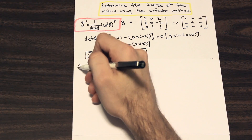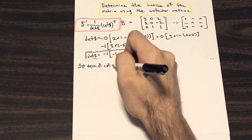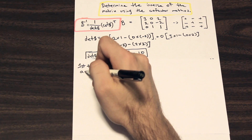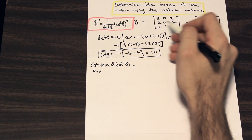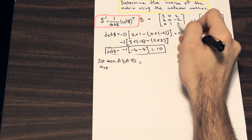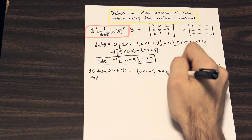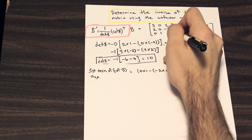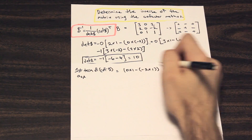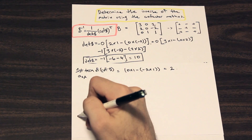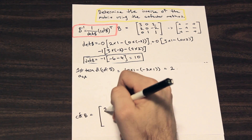For the first term, A₁₁ — first row, first column — we compute: 0×1 minus (−2)×1 = 0 minus −2 = 2. Multiplied by the sign convention, which is positive (+1) for position (1,1), that gives us 2. So the first entry of the cofactor matrix is 2.